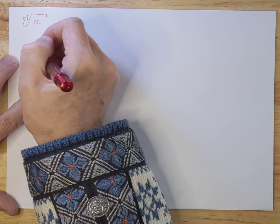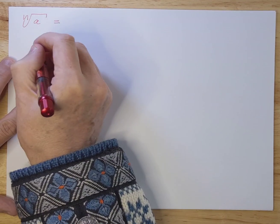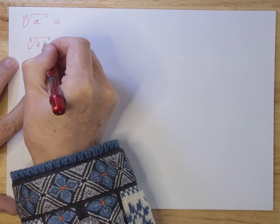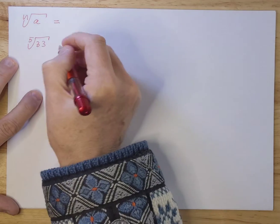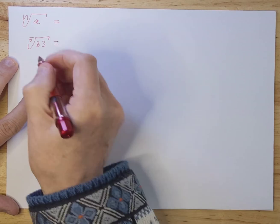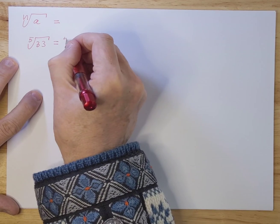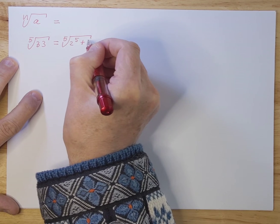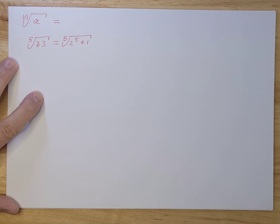To give you an example, if you want to calculate the fifth root of 33 for instance, let's take a look at that. We're going to rewrite this as 2 to the power of 5 plus 1. That's how we're going to rewrite it.